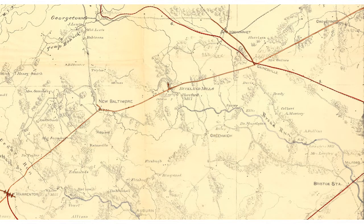On October 9, Lee started out from camps around Orange, Virginia, in a flanking move north of the Union camps near Culpeper, then turned east to Warrenton, which is at the bottom left-hand corner of this map, where the bulk of his army arrived on the 13th.